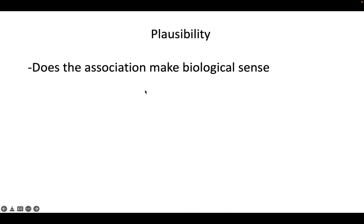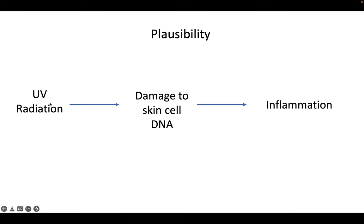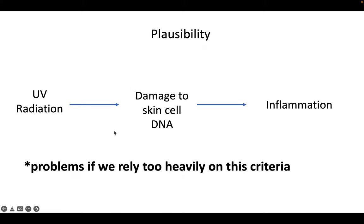Plausibility is an all-right one. Does the association make biological sense? If UV radiation is known to cause damaged skin cell DNA, and we know that can cause inflammation, then this sequence of events makes biological sense. But if we rely too heavily on this, nothing new would ever be learned — whenever anything groundbreaking is discovered, it's obviously either brand new information with nothing to support it, or it might go against what we think we know. So this one has some problems, but it doesn't hurt if it's biologically plausible.